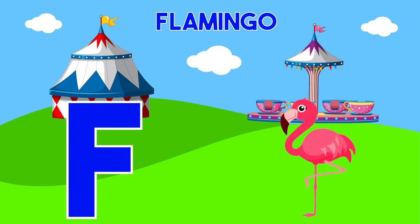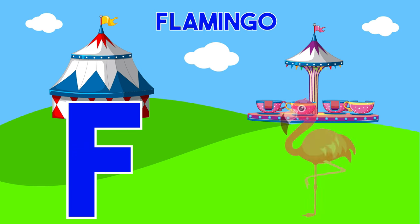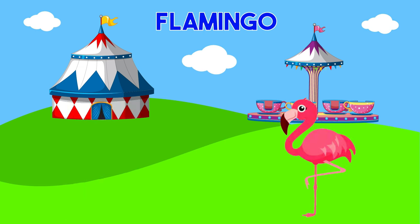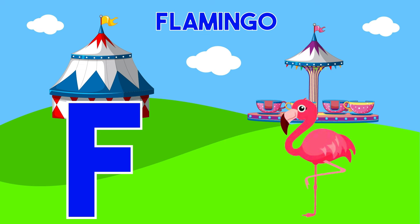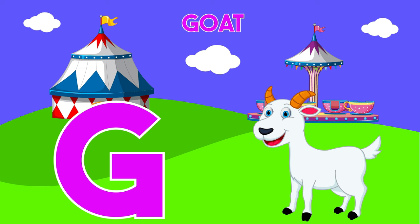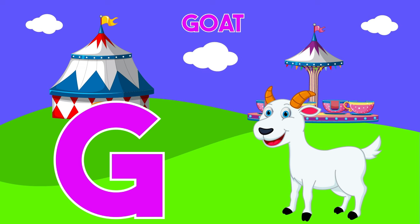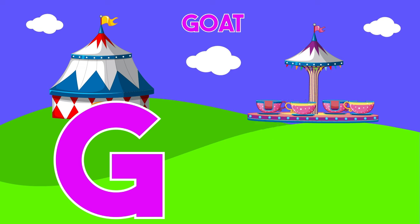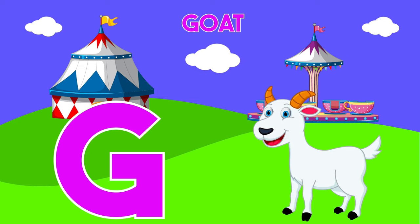F is for Flamingo. F-F-Flamingo, F-F-Flamingo. F, Flamingo. G is for Goat. G-G-G-Goat, G-G-G-Goat. G, Goat.